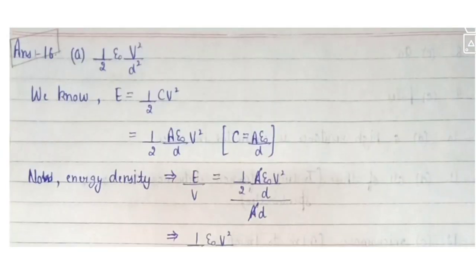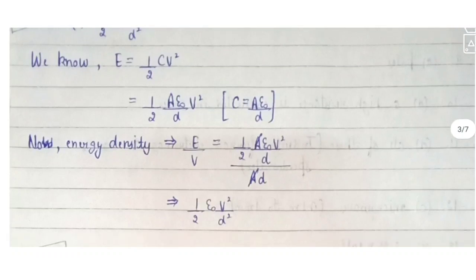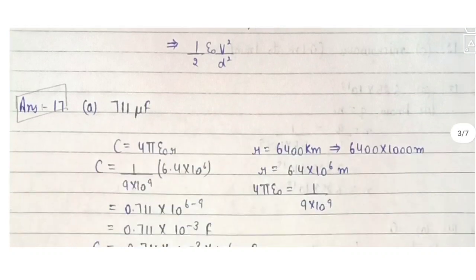Question 16: what is the energy per unit volume for a capacitor with area A and separation D kept at potential difference V? The energy formula is ½CV², where C = ε₀A/D. This gives the energy density (energy per unit volume) as E/V. Just substitute the values to get the answer.